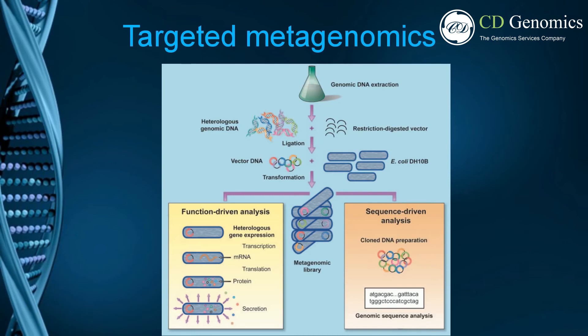Targeted metagenomic analysis involves isolating DNA from an environmental sample, cloning the DNA into a suitable vector, transforming the clones into a host bacterium, and screening the resulting transformants. The clones can be screened for phylogenetic markers, such as 16S ribosomal RNA, or for other conserved genes by hybridization or multiplex PCR, or for expression of specific traits, such as enzyme activity or antibiotic production. High numbers of novel biocatalysts have been identified by function-based or sequence-based screening of metagenomic libraries derived from various environments.